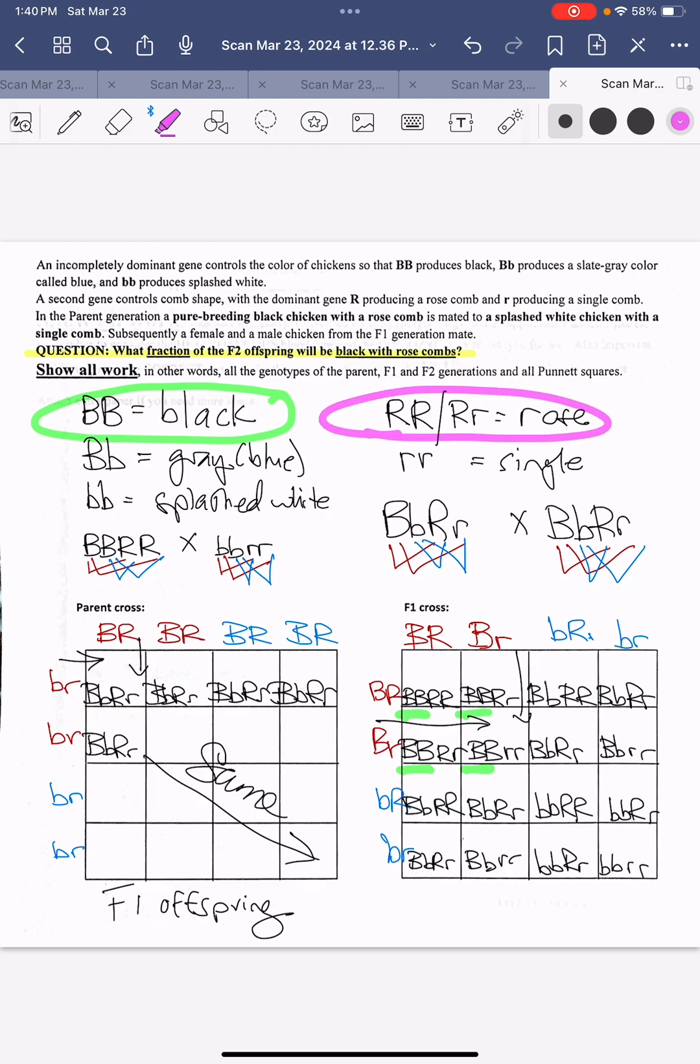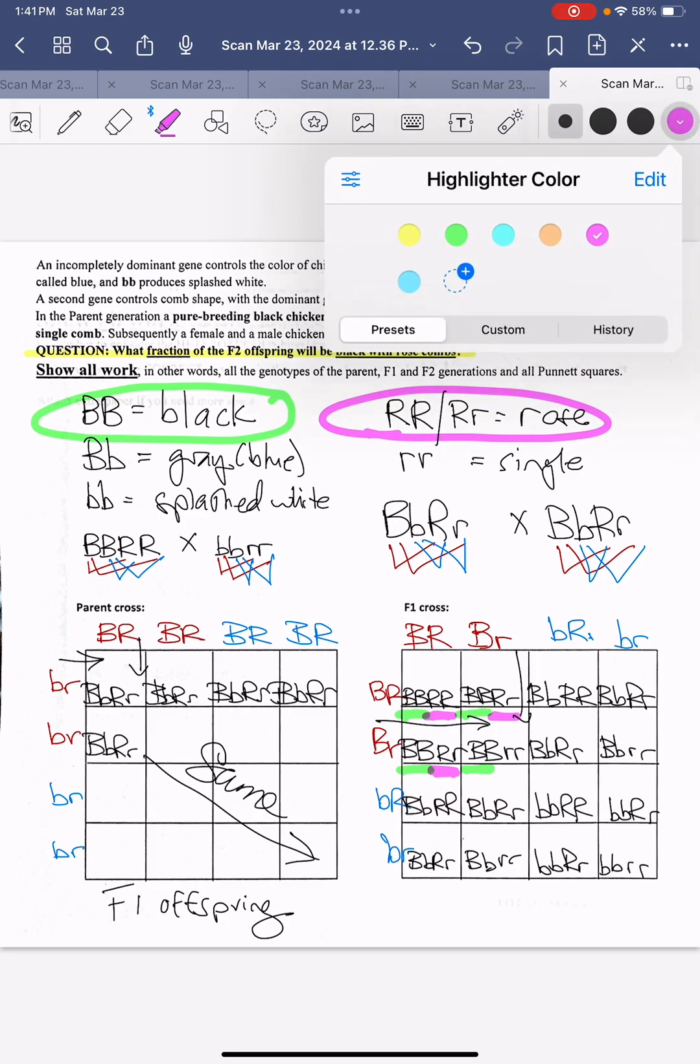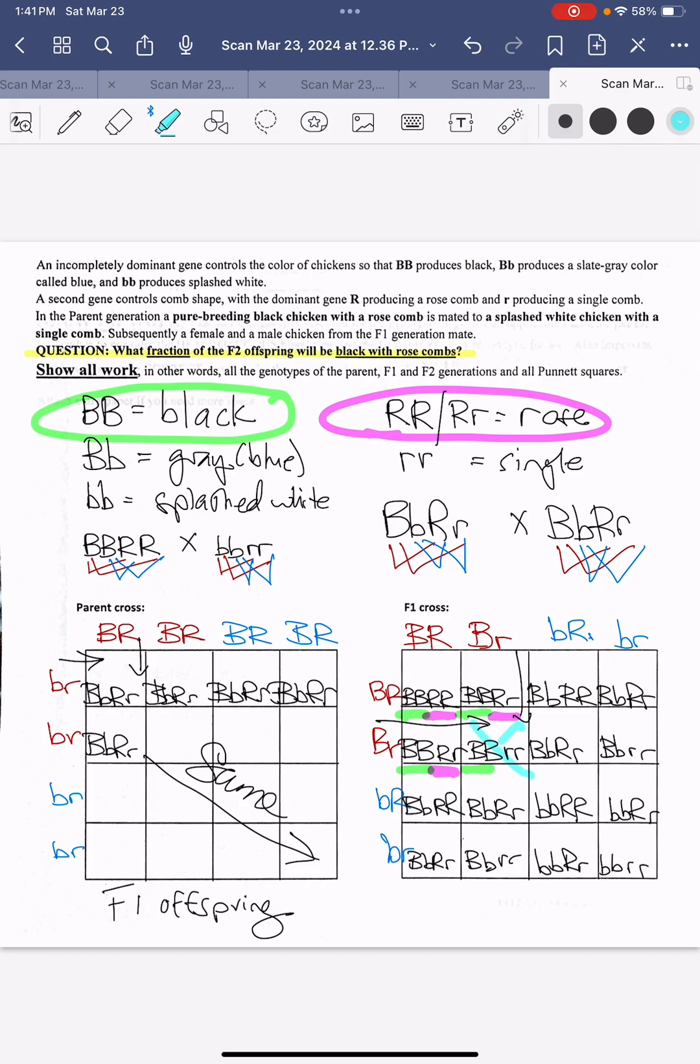And then we're also looking for the other trait, the rose comb, which can be big R, big R, or big R, little R. So let's underline all of those. We'll see there's three options. It has to be a big B, big B, right? So we cannot count this third option.